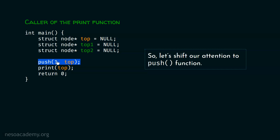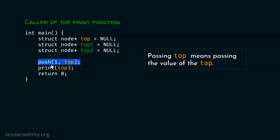Let's shift our attention to the push function. Passing top means passing the value of top — we are passing the copy of top. Although top is a pointer, it is a special type of variable that stores the address of something else. Here, top is initialized to null, which means null is passed to the push function. After completion of this push function, this top pointer must receive the address of the first node, and the first node must hold the value one. Maybe after calling this push function, the top pointer is not receiving the address of the first node.